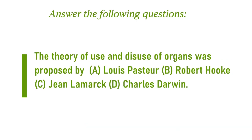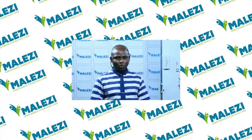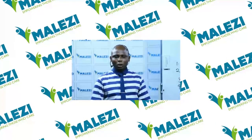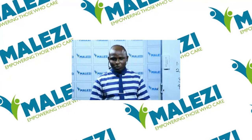The last question: The theory of use and disuse of organs was proposed by — Jean Lamarck or Charles Darwin? That's correct — the answer is Jean Lamarck. Don't forget Jean Lamarck explained his theory using two concepts: use and disuse of body parts, and the inheritance of acquired traits. That will be all for today. Thank you for joining us — don't forget to tune in next week same time, and don't stop learning!